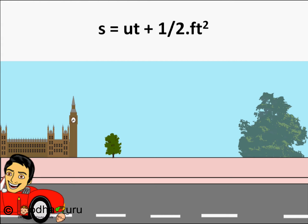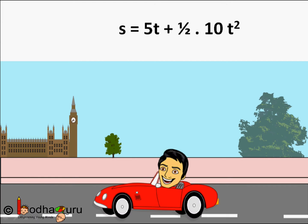Here u, the initial velocity, is 5 m per second. Acceleration f is equal to 10 m per second squared. So the polynomial becomes s = 5t + ½ × 10t², which equals 5t + 5t².